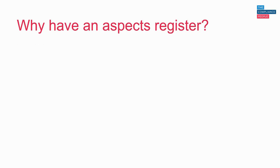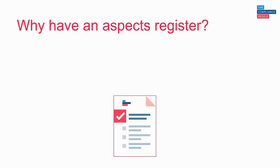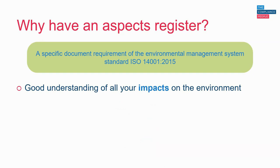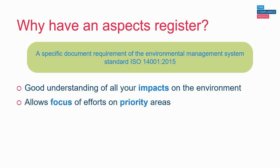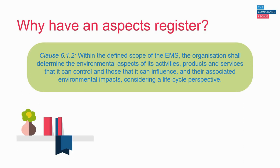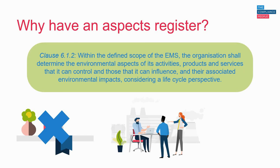Why would organisations have an aspects register? For those certified or looking to become certified to ISO 14001, it is a specific document requirement of this standard to have an aspects register — you won't become certified or keep your certification without one. In addition, having an aspects register gives an organisation a good understanding of all their impacts on the environment and allows them to focus efforts on priority areas. It should be a useful working document that staff are aware of and is regularly reviewed, not just a file on a shelf.